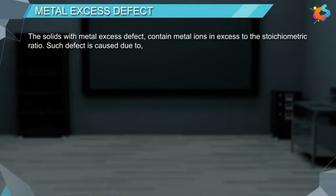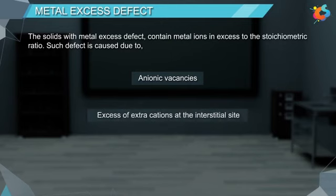Metal excess defect: the solids with metal excess defect contain metal ions in excess to the stoichiometric ratio. Such defect is caused due to anionic vacancies, excess of extra cations at the interstitial site.